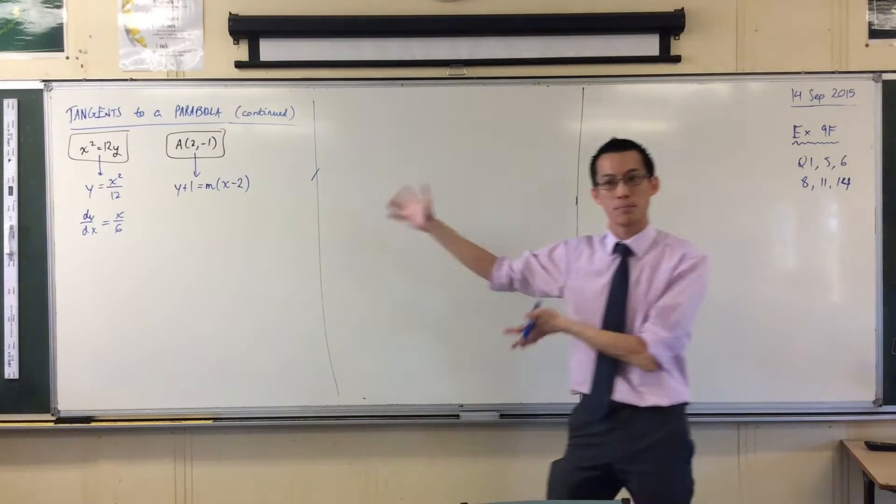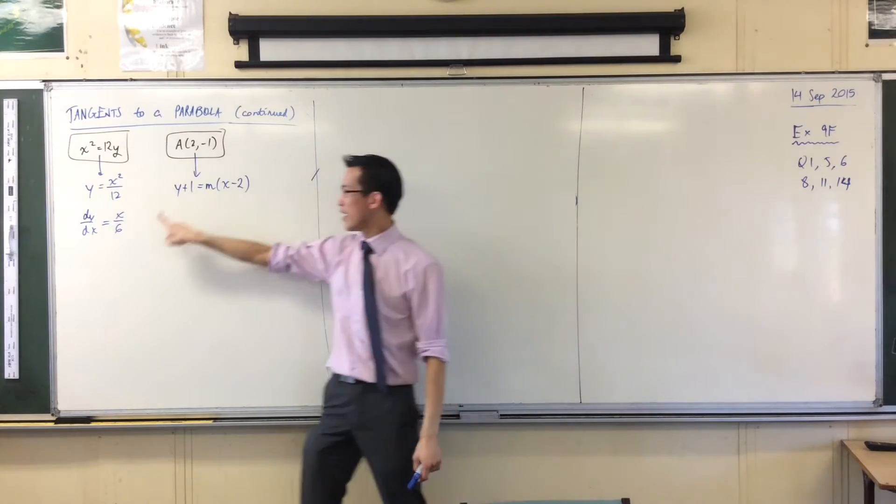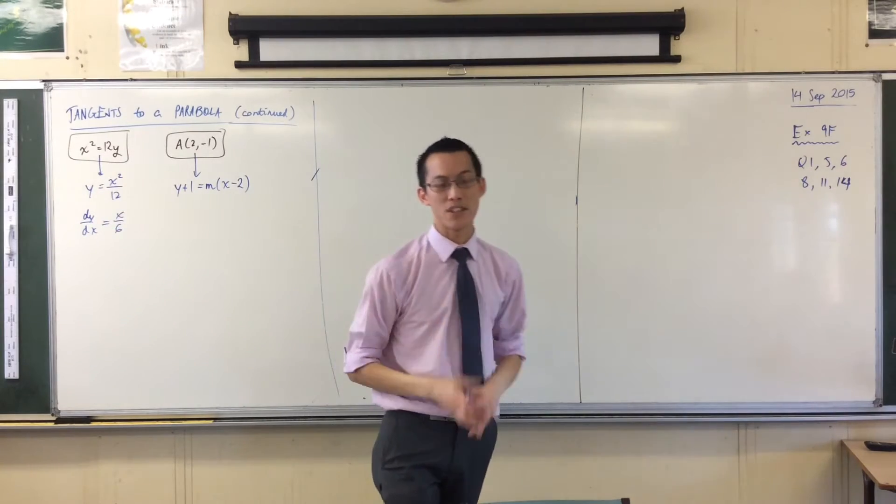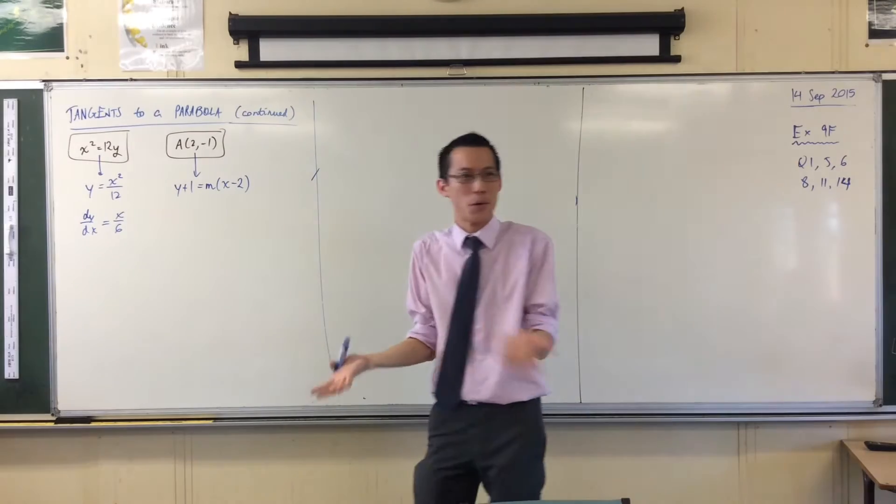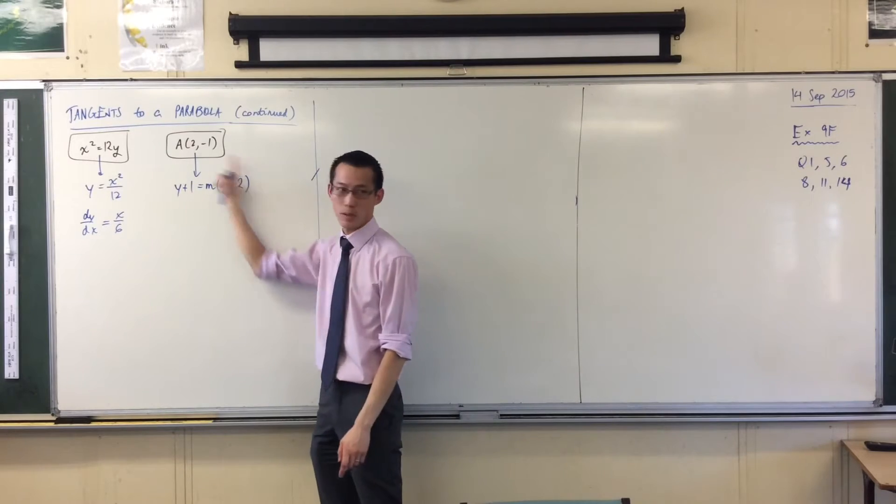It ends up being not useful to this particular problem because it's all about this point, right? You can only use this if you know where on the parabola you're already going to intersect. But the whole point is you don't know, right? You only know about this point. So, this is where the action is really going to be happening.